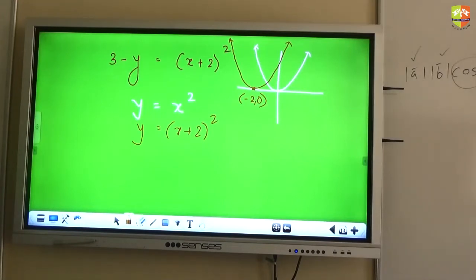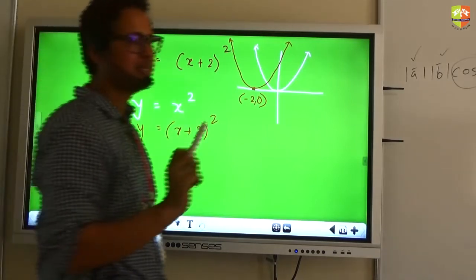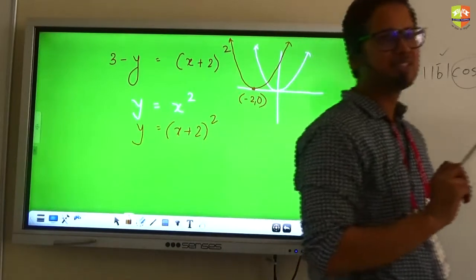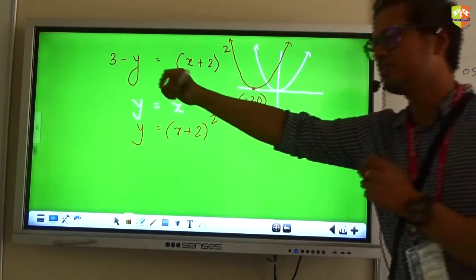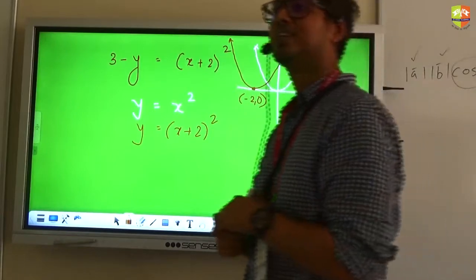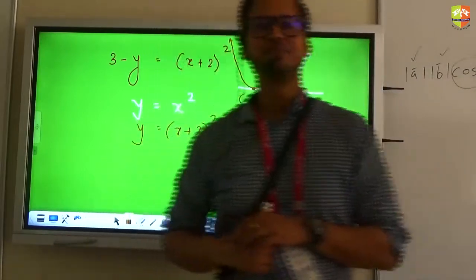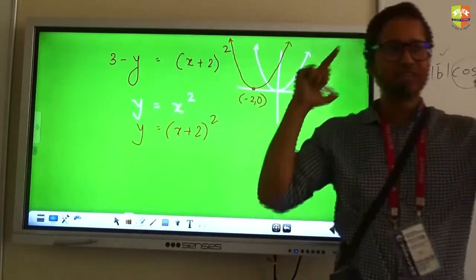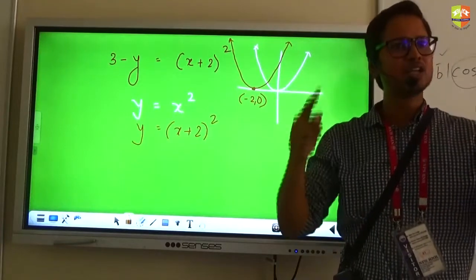Next what do you want to do? Do you want to change Y with Y plus 3 right now? Or do you want to change your Y with negative Y? Now this is the confusion that people had last year. How do you decide the order of the transformation?